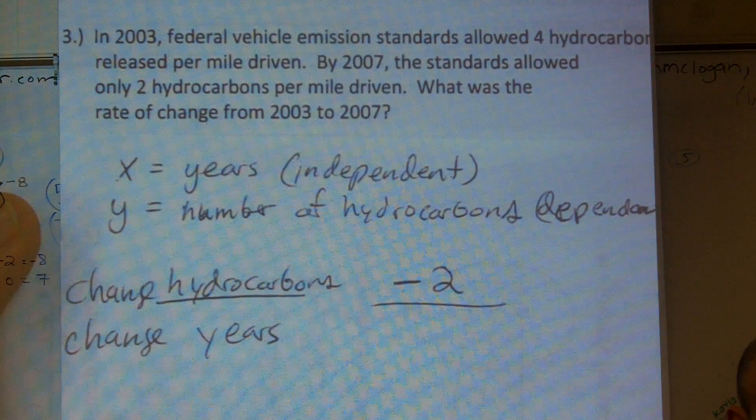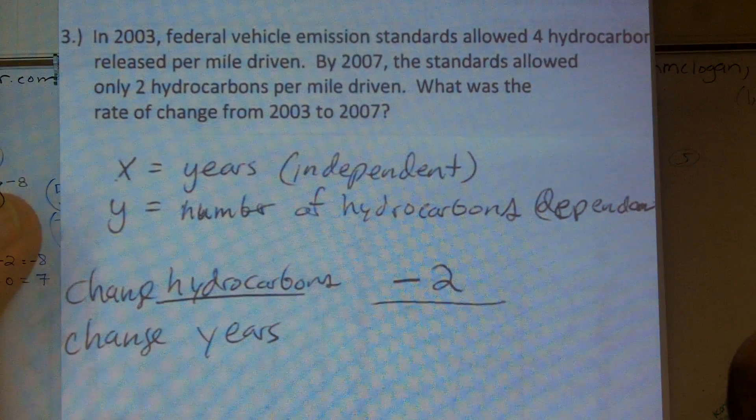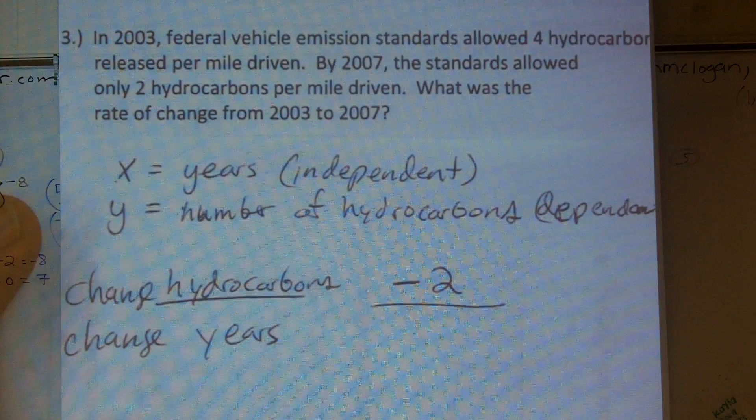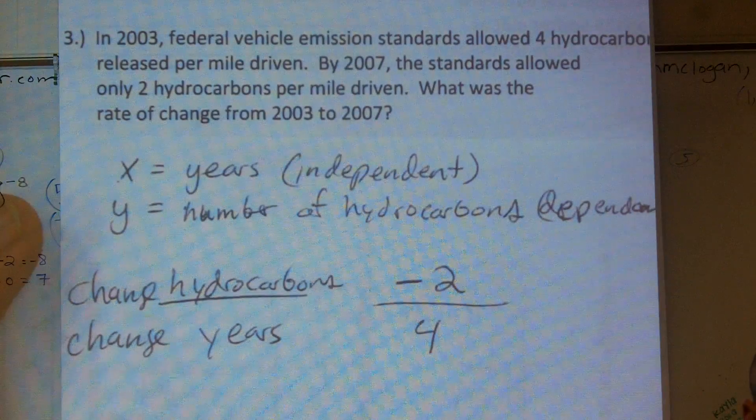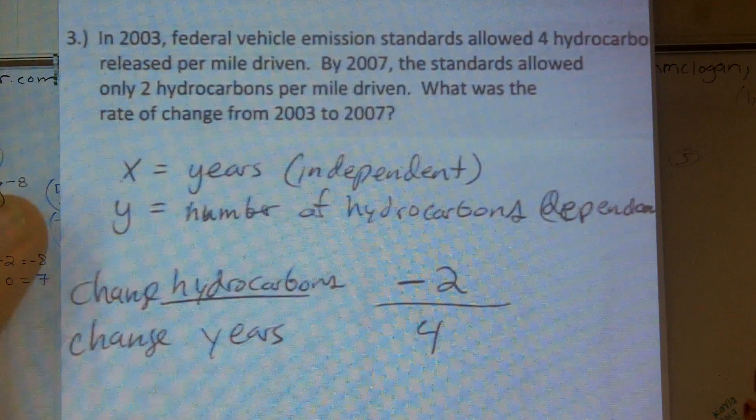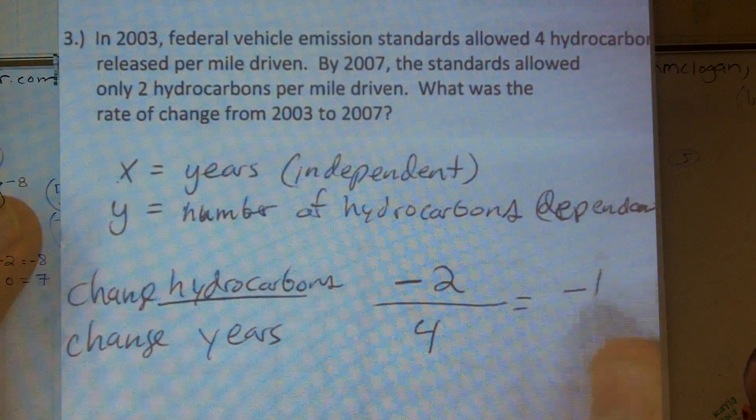And then from the years, from 2003 to 2007, how many years did we change? Four. So the change in years would be four. So therefore, I can reduce my rate of change to equal negative one half.